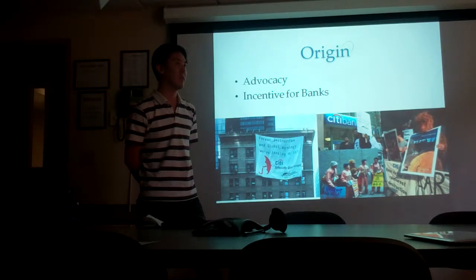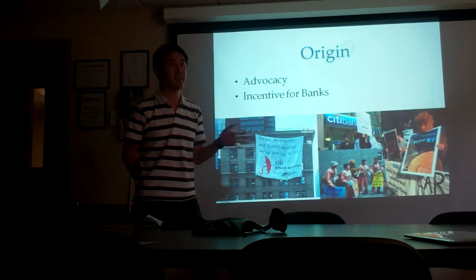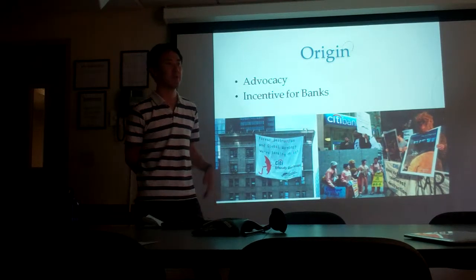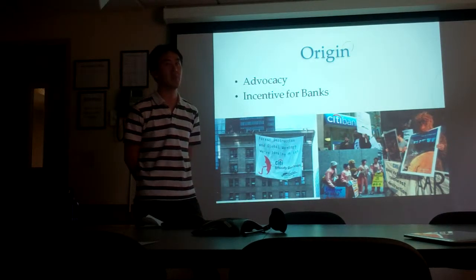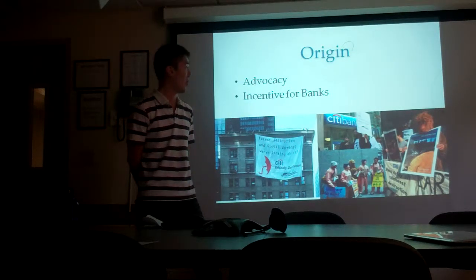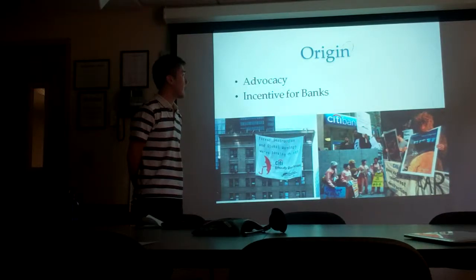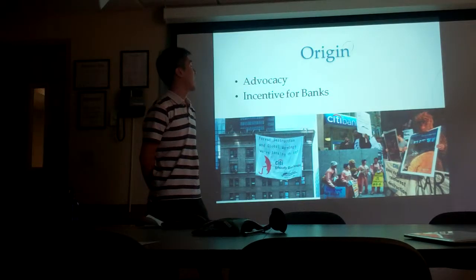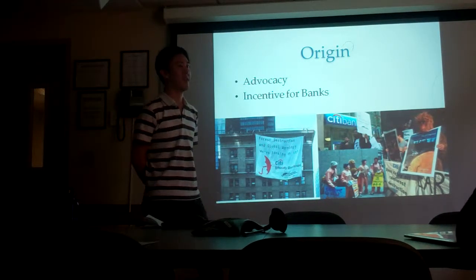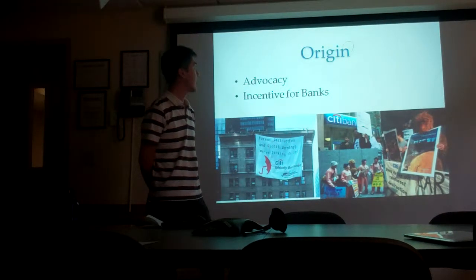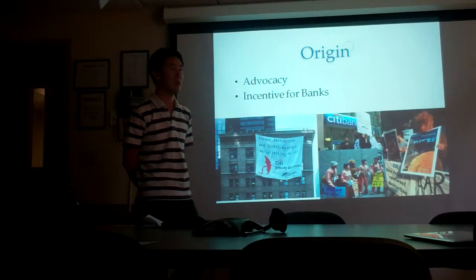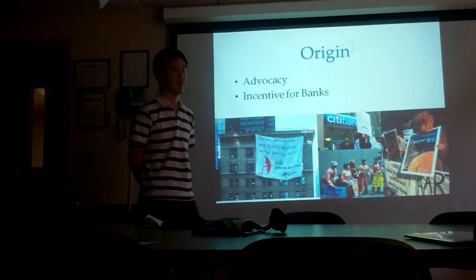Additionally, financial institutions care more about reputation because they cannot differentiate their product. People care about Samsung versus Apple because the products have different functions. But financial institutions just provide money, and money is money — there is no difference in the product. That's why image and reputation matter more for financial institutions. So Citibank decided that adopting the Equator Principles was less costly than coping with advocacy by environmental activists. Once Citibank adopted the policy, they used it to promote their product offering.